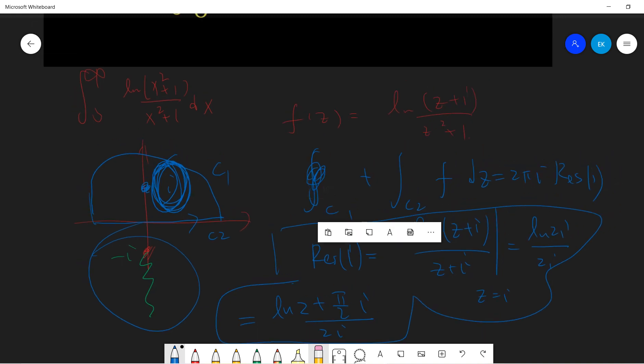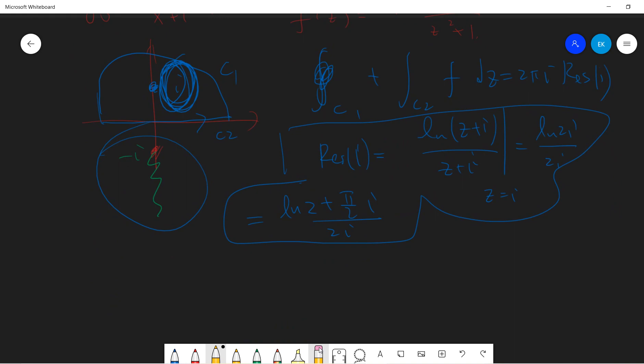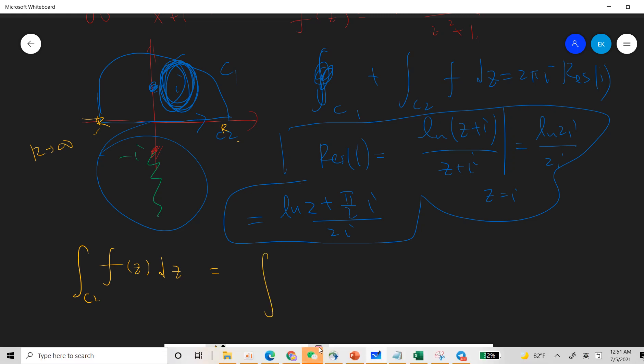So now let's take the c2. Let's compute the integral. So c2, this is r, minus r and r. And we take r to be infinity. So c2 f dz will be just minus r to r. But the difficult part is that since log in a real space do not define at a negative value, we need to split this. So let's write this as minus r to 0 and 0 to r, log x plus i over x squared plus 1 dx.